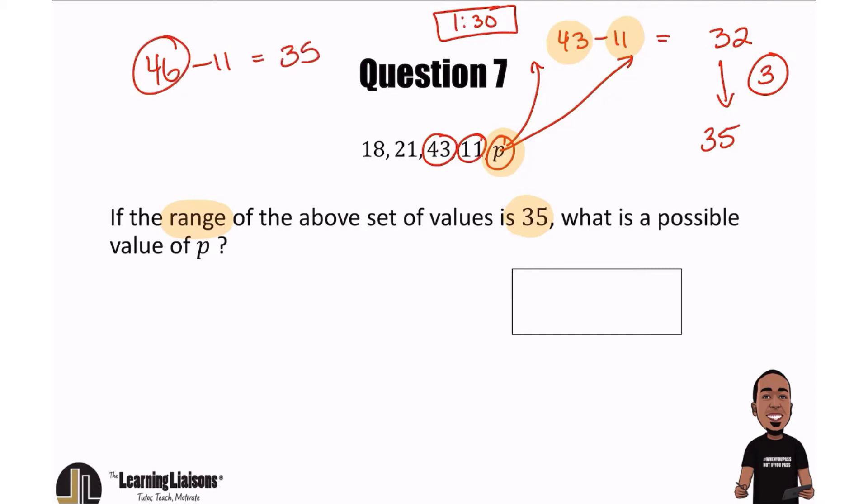And if it was eight, so let's say we didn't change the 43, let's say we changed the 11. So 43 minus eight, that is still 35.